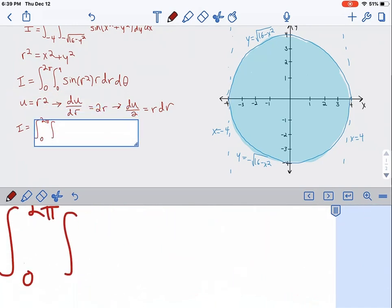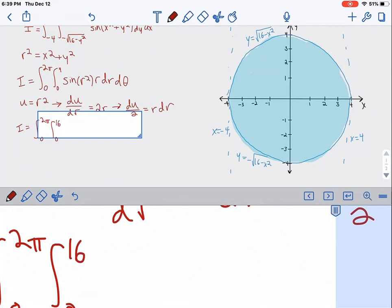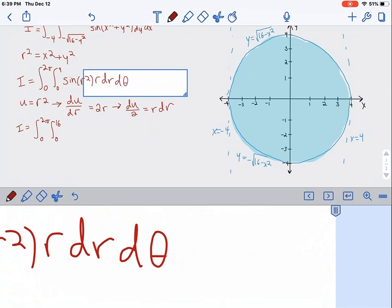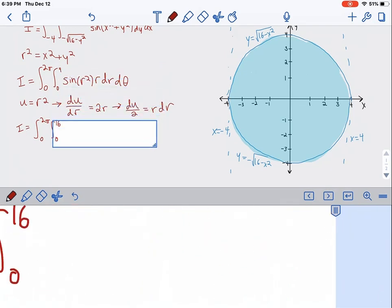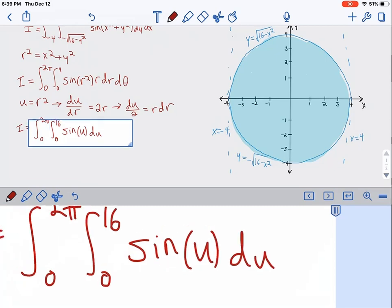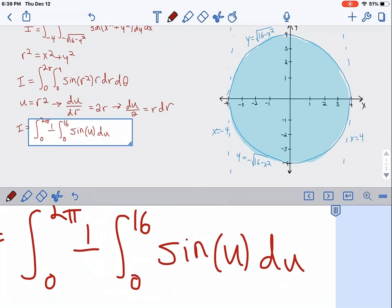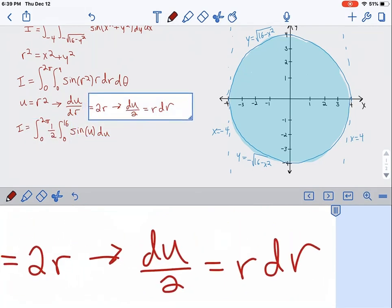The inner integral will be in terms of u. Since 0 squared is still 0 and 4 squared is 16, the new bounds are 0 to 16. The integral, replacing r dr and r squared with u, becomes sine of u du. And we have the constant 1 half out front, because it's du over 2.